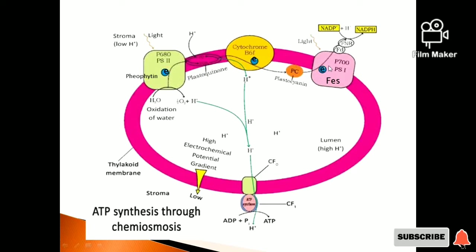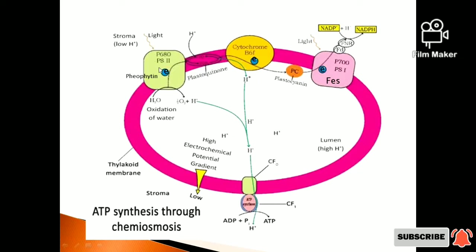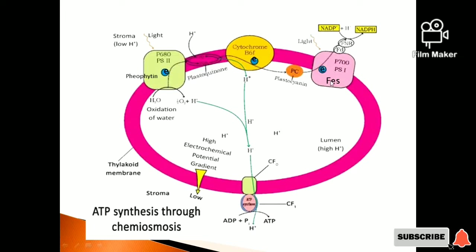The next complex is Photosystem I (PS1). The reaction center is P700. There are various components in PS1, but FES (iron-sulfur protein) is a main component. There is also a stroma-side protein called Ferredoxin.